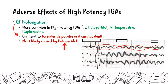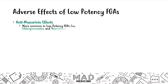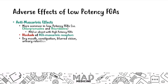Now let's discuss the low-potency first-gen antipsychotics, specifically chlorpromazine and thioridazine. The first effect is anti-muscarinic: these drugs block acetylcholine muscarinic receptors, leading to dry mouth, constipation, blurred vision, and urinary retention — the classic anticholinergic side effects. This is not prominent in high-potency drugs, so watch for a patient presenting with these symptoms on low-potency first-gen agents.